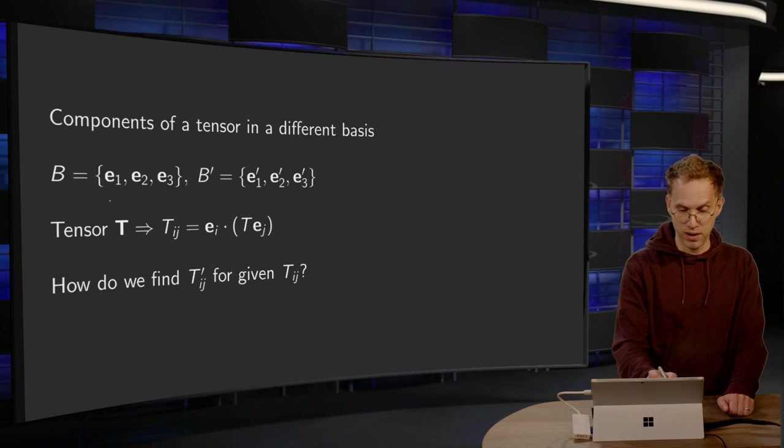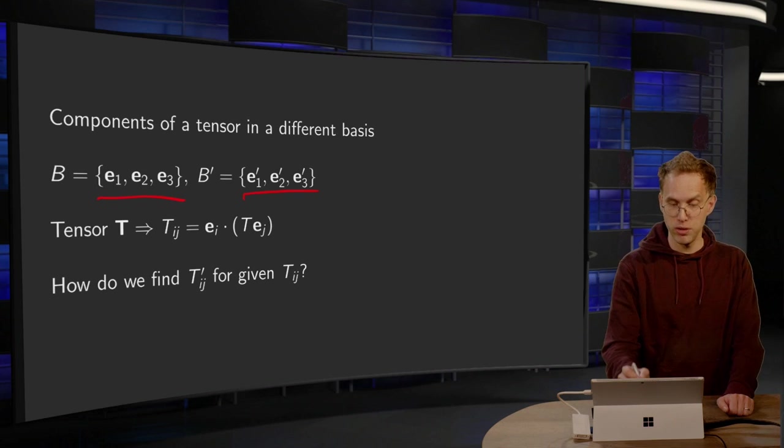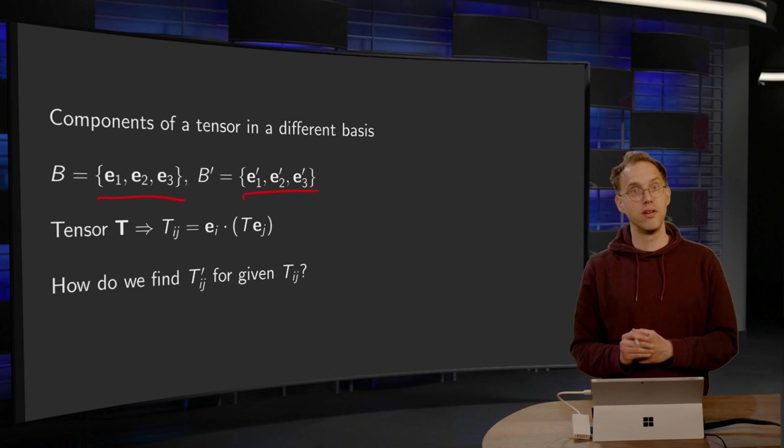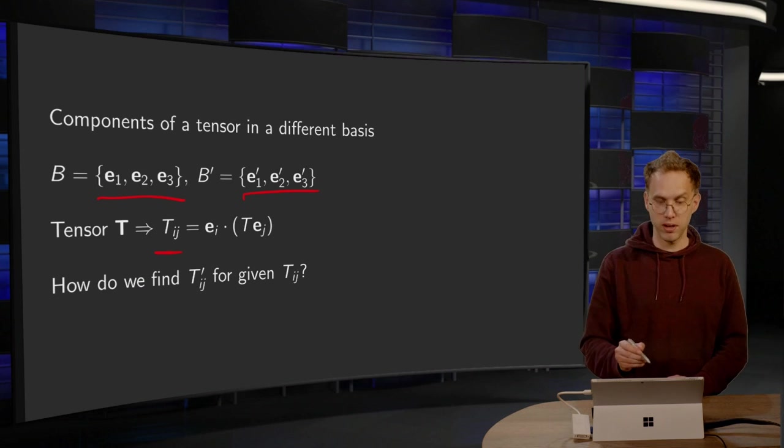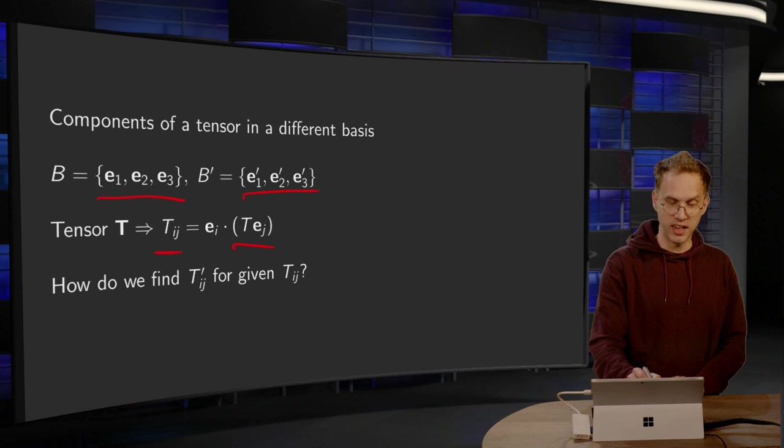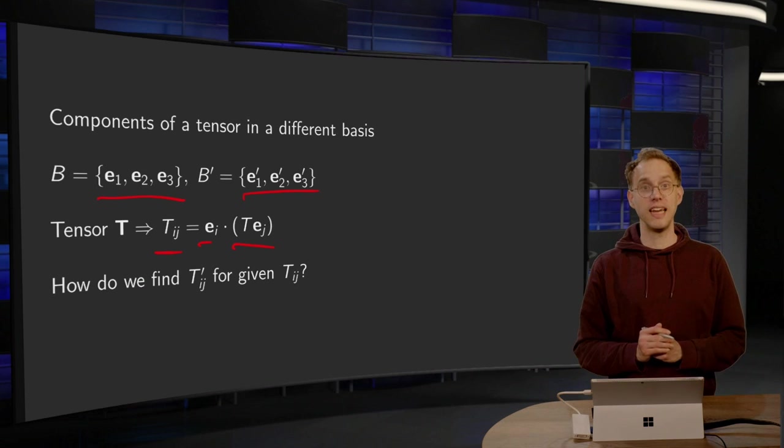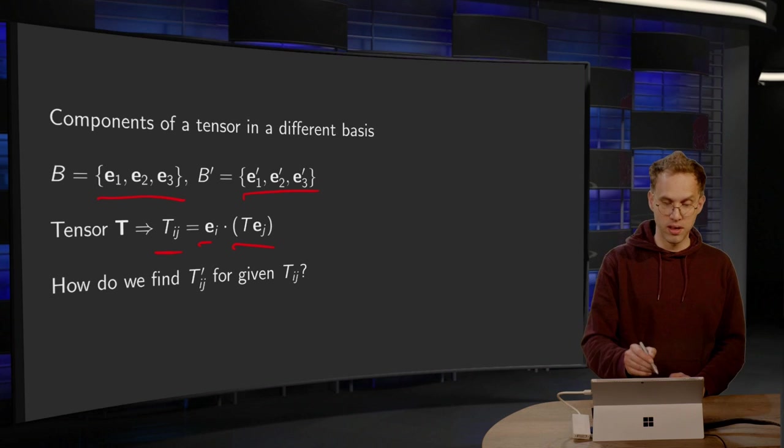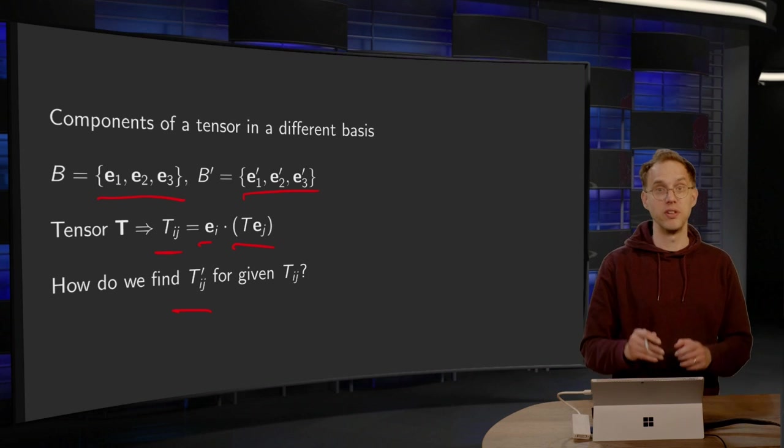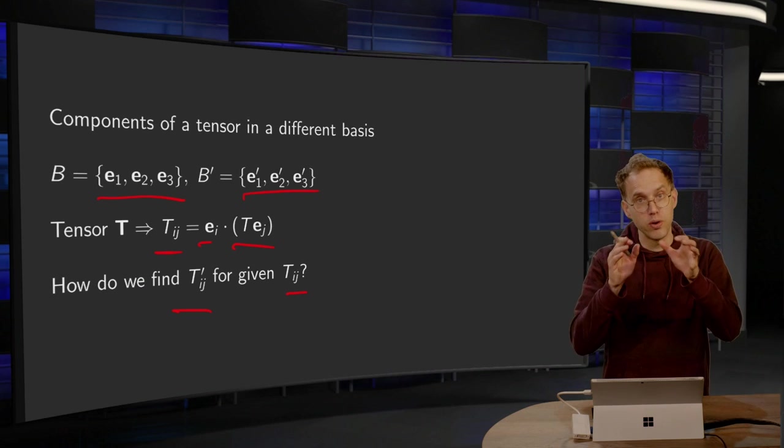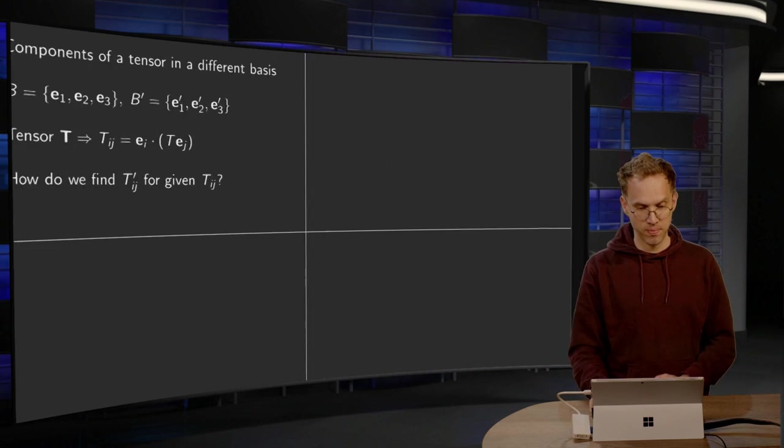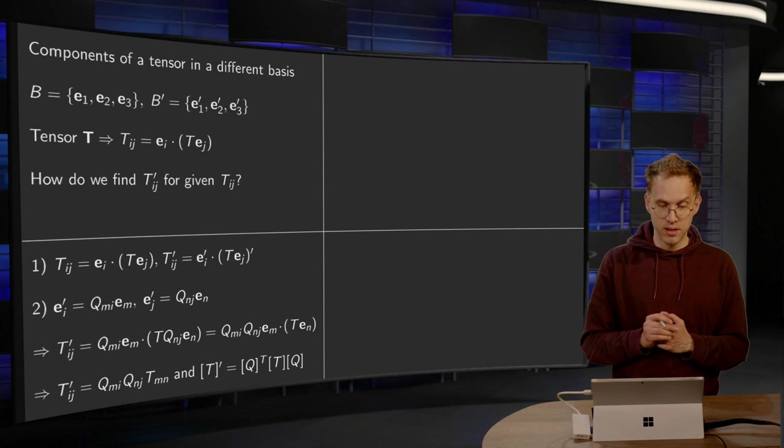So again we have our old basis and our new basis. If you have a tensor T you can find its components T_ij by computing T·e_j and then taking the inner product with e_i. So how do we find our components, the numbers in our prime basis, if we have them in our normal basis?